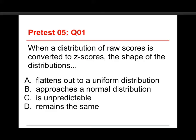The first question is, when a distribution of raw scores is converted to z-scores, the shape of the distributions: A. flattens out to a uniform distribution, B. approaches a normal distribution, C. is unpredictable, or D. remains the same. The answer to this is D. It remains the same.